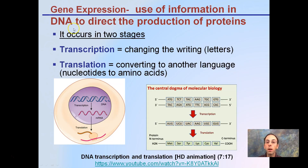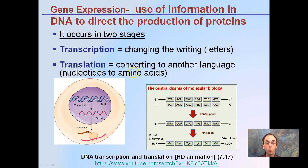Gene expression is the use of information in DNA to direct the production of proteins. This occurs in two stages: transcription — the changing of the letters, think of it as writing — and translation, which is conversion to another language. Nucleotide language to amino acids is a way to think about that. We go from our DNA to our RNA to ultimately our protein. We have our double-stranded DNA being transcribed to RNA — we know it's RNA because of uracil — and it's being translated to a sequence of amino acids.